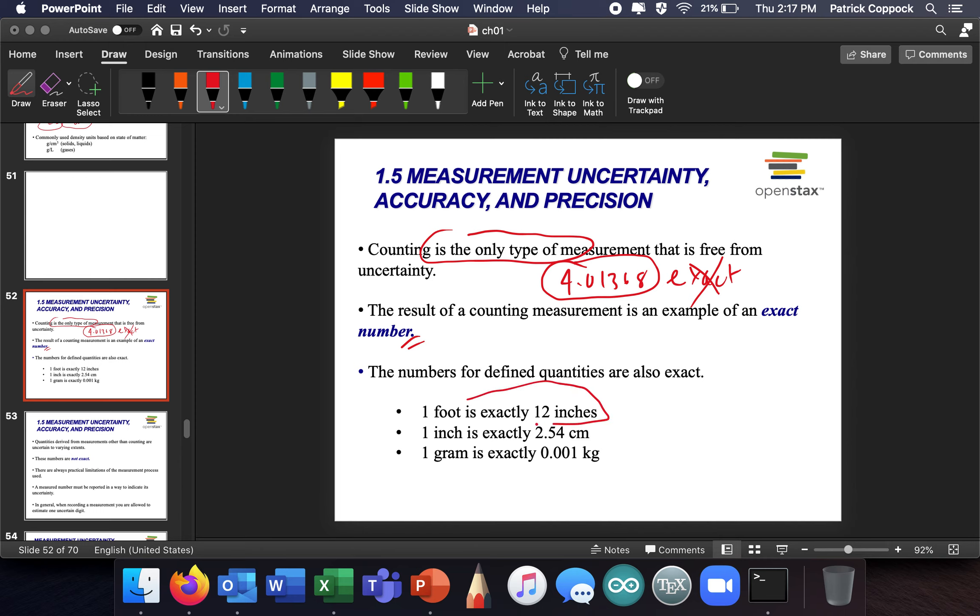So 1 foot is exactly 12 inches because it's defined by inches. 1 inch is exactly, this is pretty subtle, 1 inch is exactly 2.54 centimeters. That's subtle. I'm not going to try to explain that too much right now because frankly, it takes a little faith. That's the definition. 1 gram, though, is exactly 0.001 kilograms, right? Because 1,000 grams is equal to 1 kilogram by definition. So that's just counting. That's where we get exact numbers.